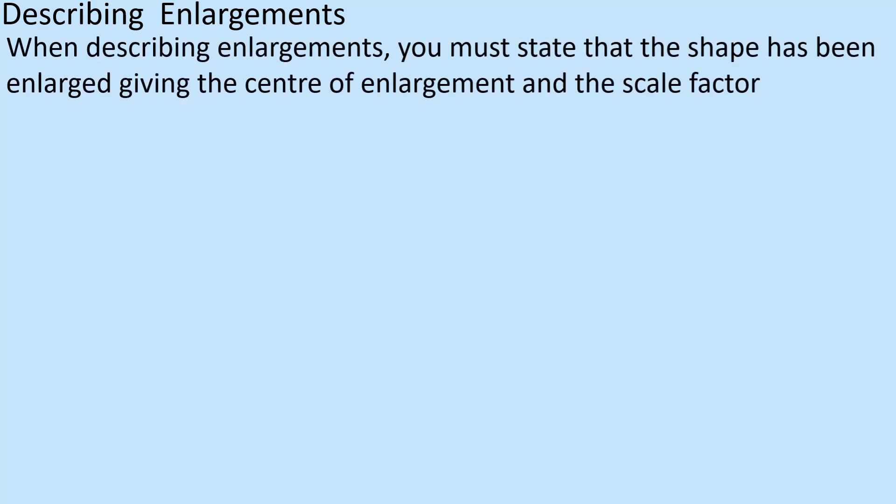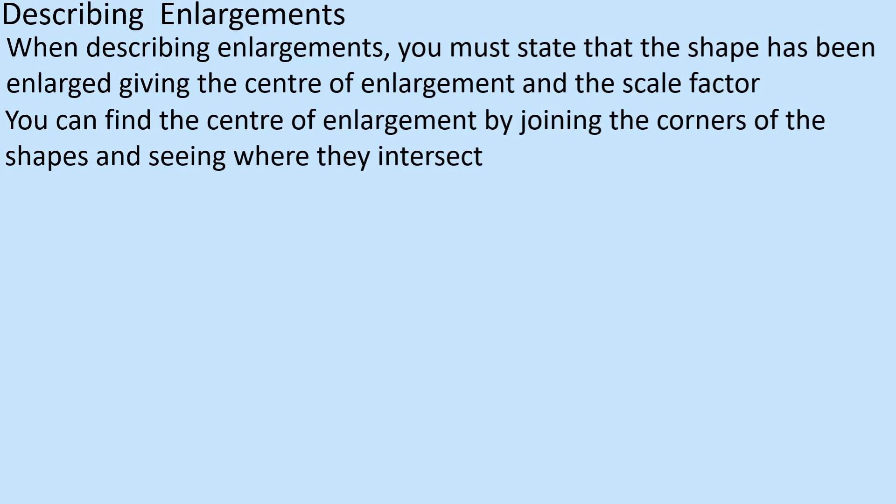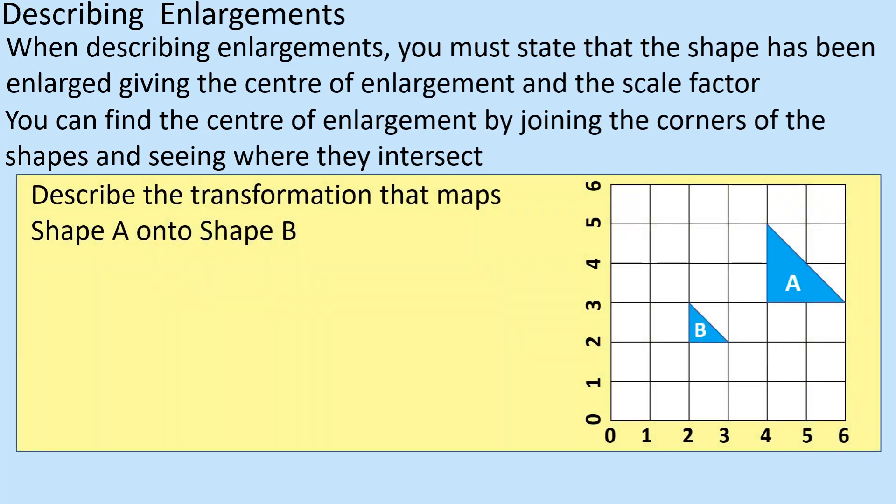When describing enlargement, you're looking for the shape that's been enlarged by a given center of enlargement and the scale factor. In terms of finding the center, the best way of doing it is joining the corners of the shape and seeing where they intersect. So we're going to look at an example to make it a little bit easier.